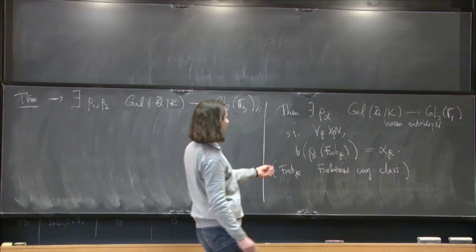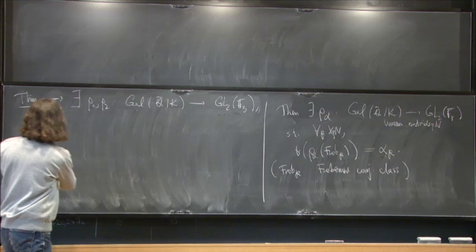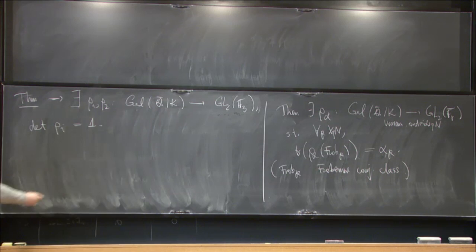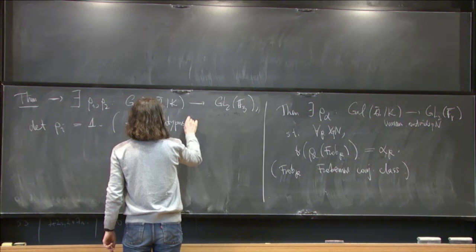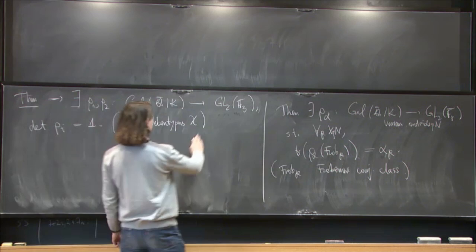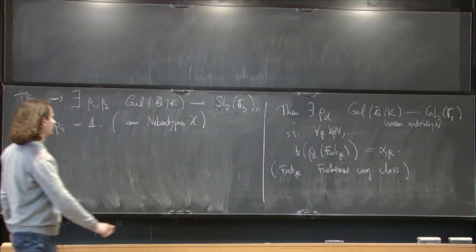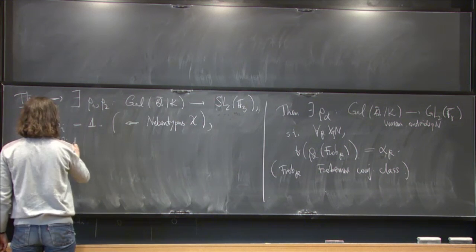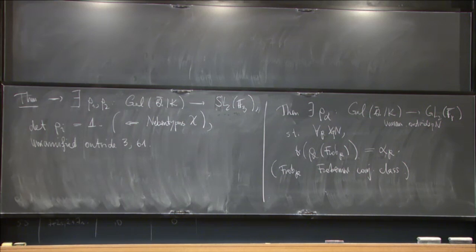As Delim was asking, I can identify the determinant of this representation. And because I fixed this nebentype, actually the determinant of these representations will be trivial. So, this is going to SL2 F3. And they are unramified outside 3 times 61. And which has this property for the Frobenius eigenvalues.